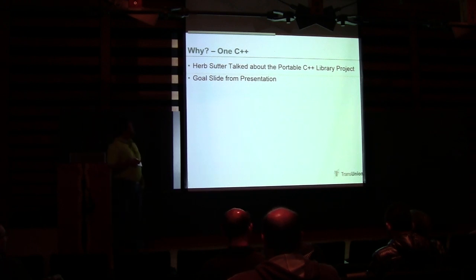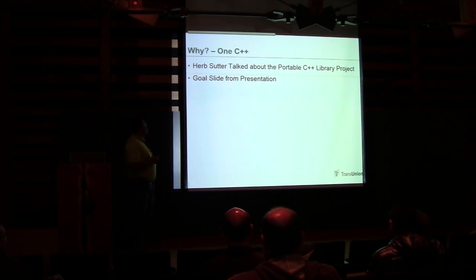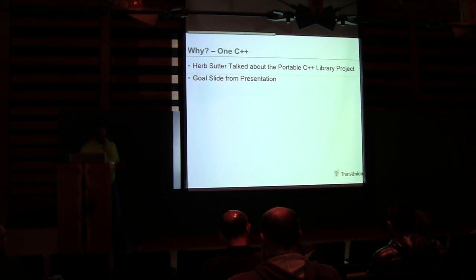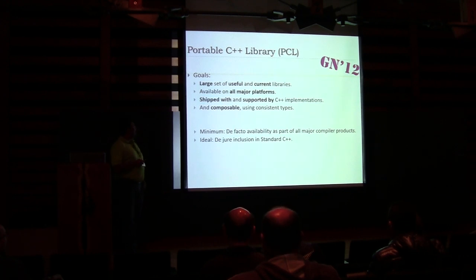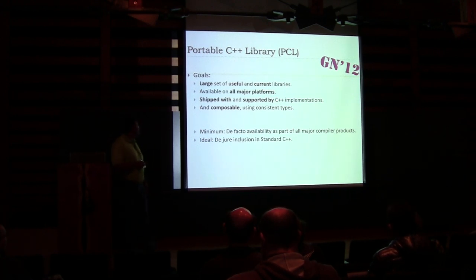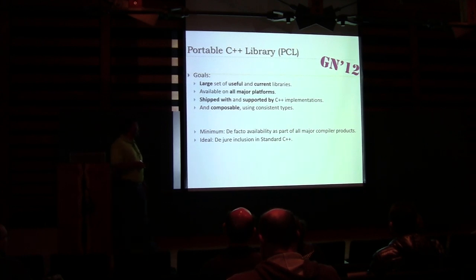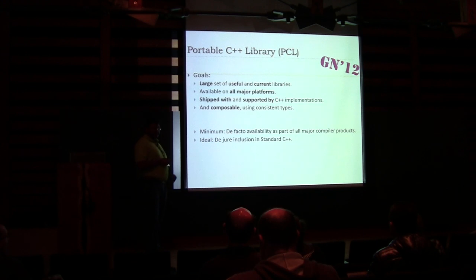Another reason: in the Going Native talk back in 2012, Herb Sutter talked about his portable C++ library project. It was a large set of useful and current libraries available on all major platforms, shipped with and supported by C++ implementations, and composable using consistent types. Basically, he wanted de facto availability as part of all major compiler products.